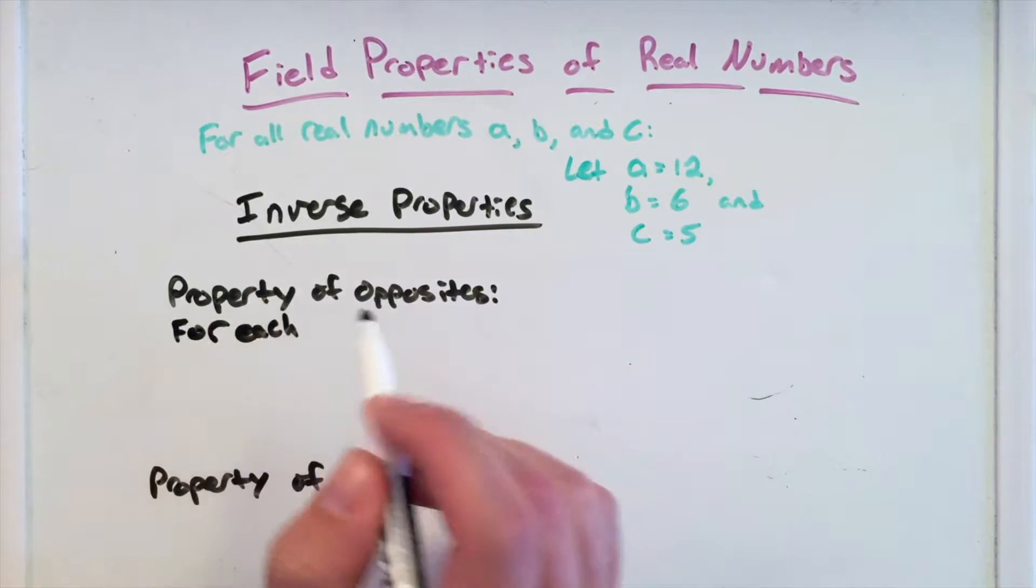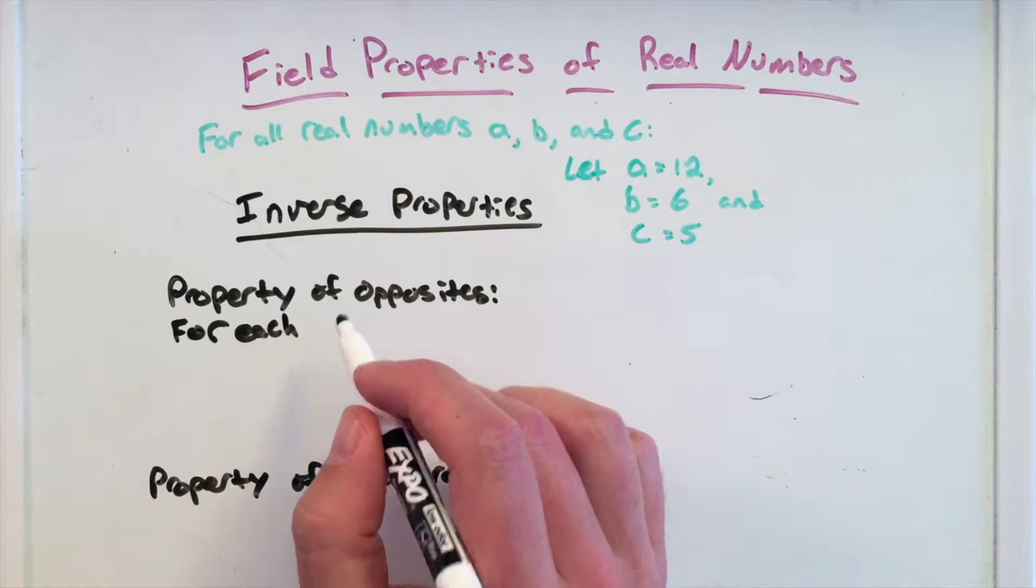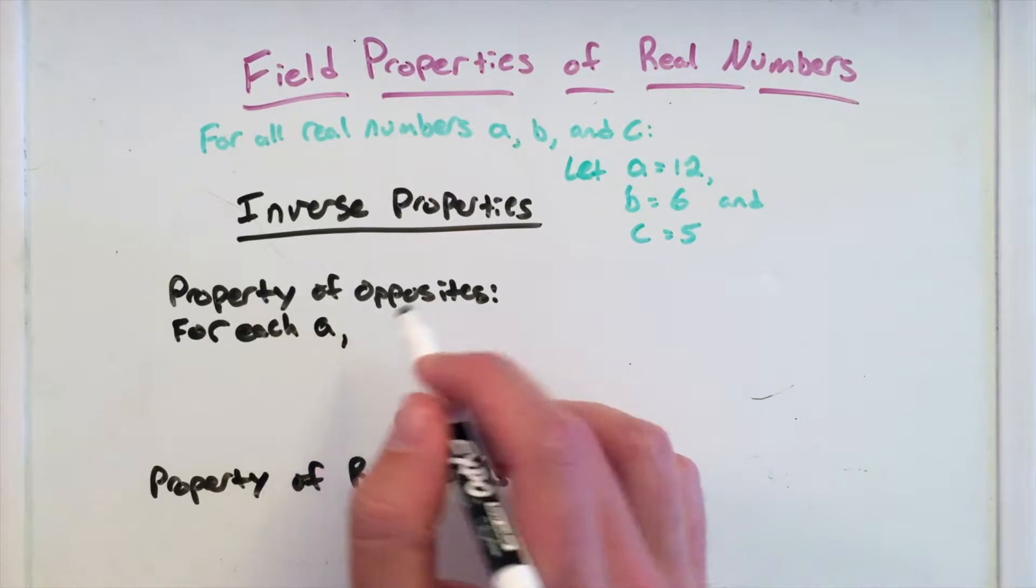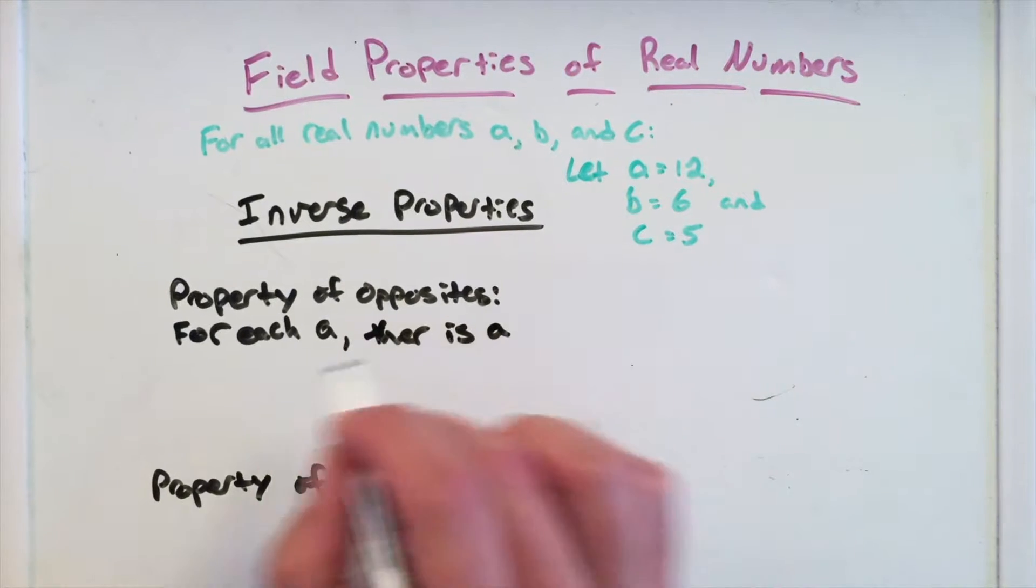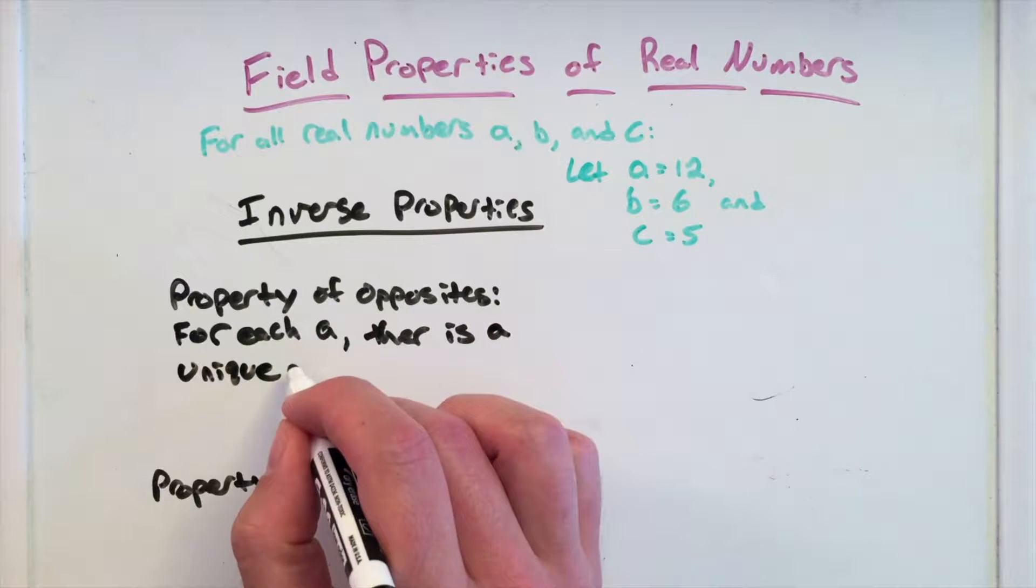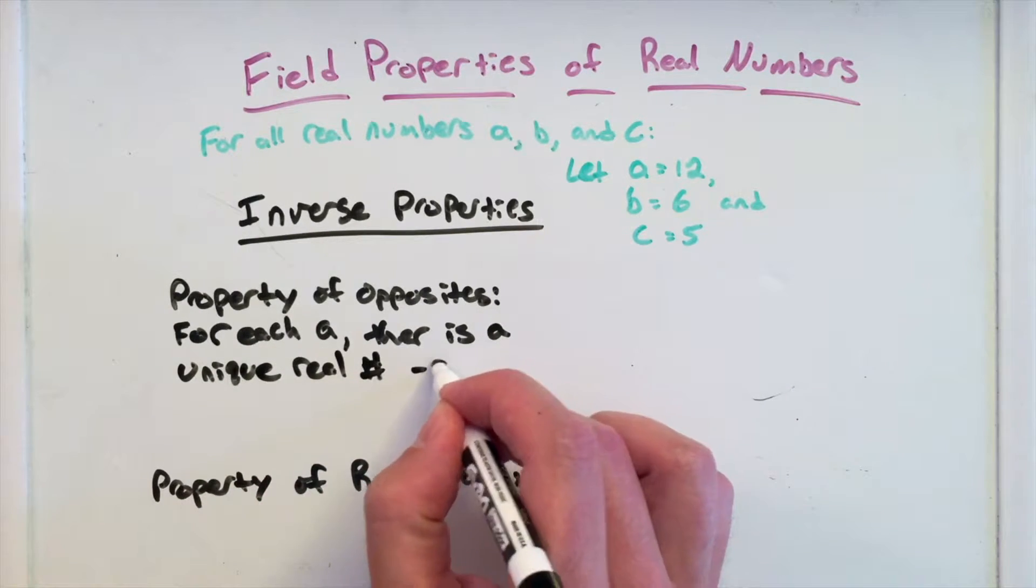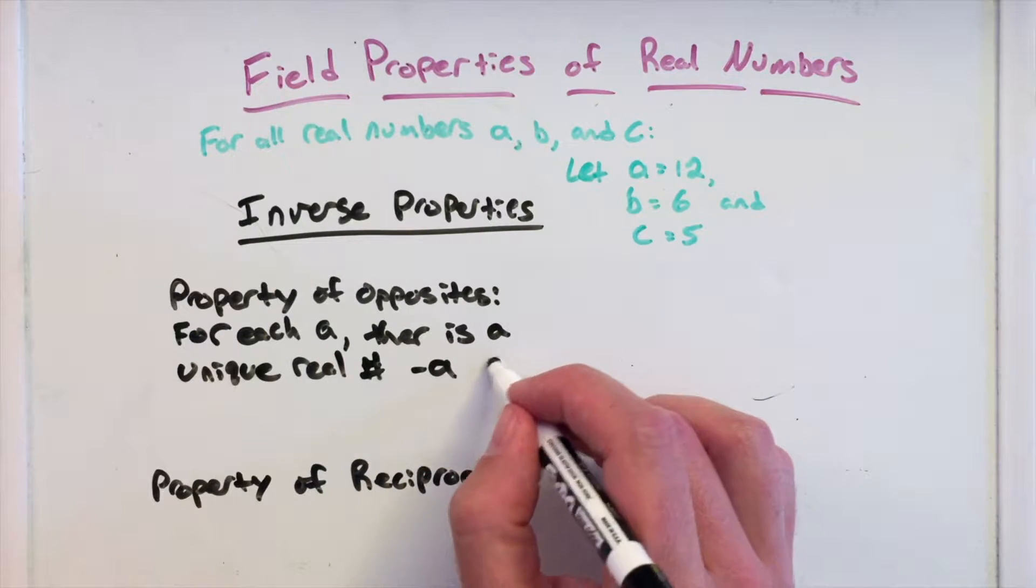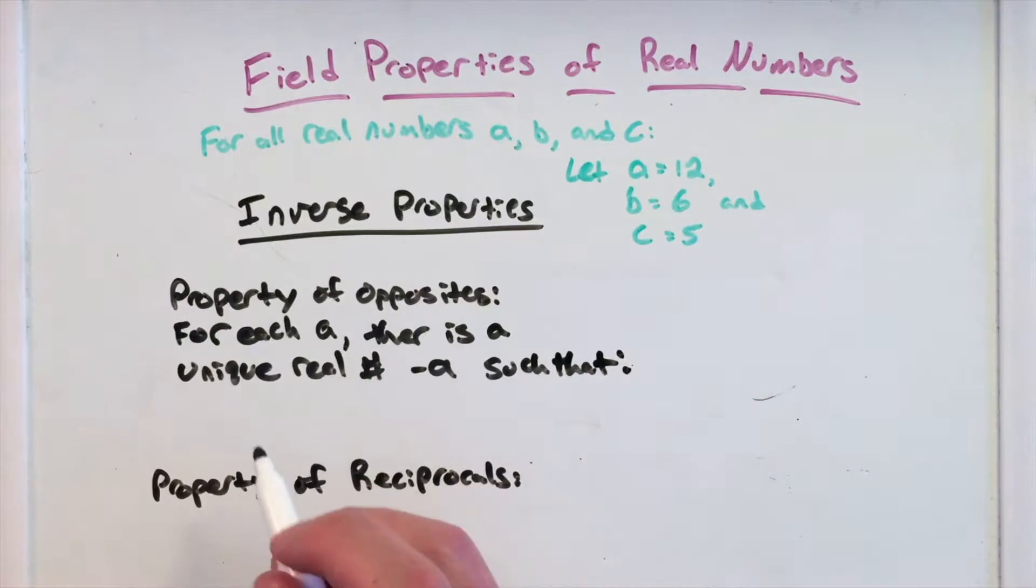For each A, there is a unique real number, negative A. That unique is a specific, there's a unique one and only.